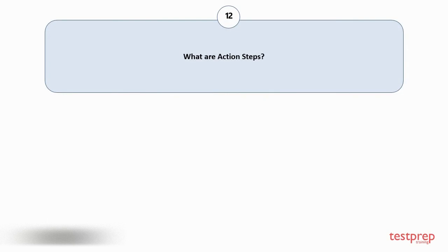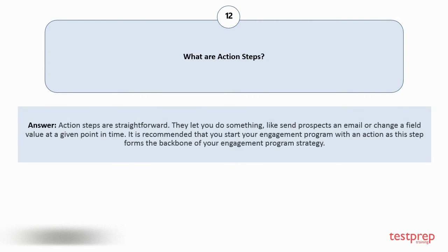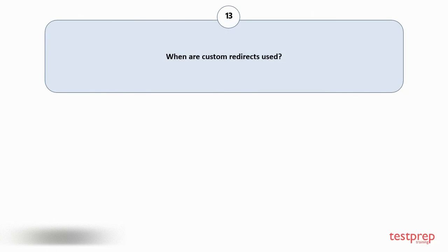Question number twelve: What are action steps? Action steps are straightforward — they let you do something like send prospects an email or change a field value at a given point in time. It is recommended that you start your engagement program with an action, as this step forms the backbone of your engagement program strategy.